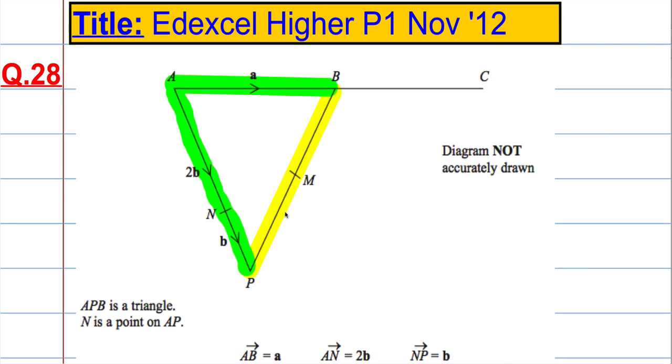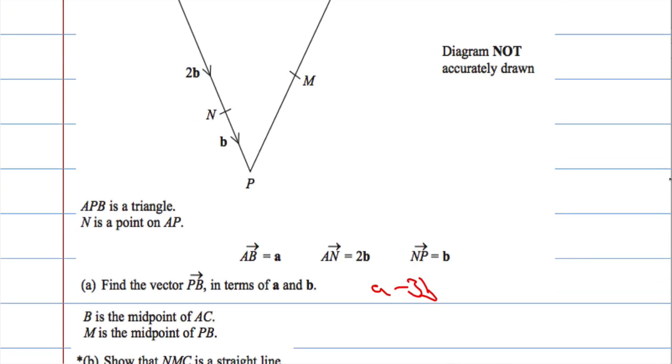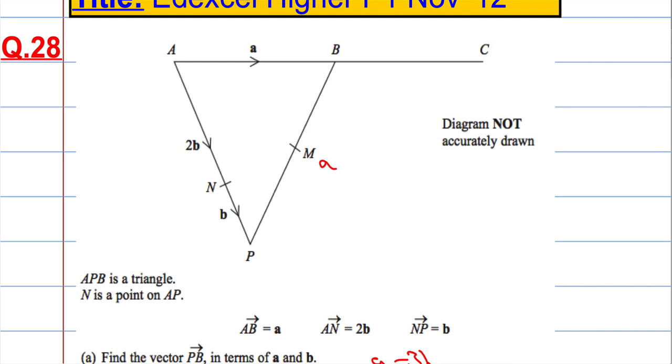Now, let's just fill in on the diagram what we already know. We know that PB, this vector here, let's just tidy this up a wee bit. PB, to go from here to here, we know is a minus 3b. So it's a minus 3b when we travel in this direction.